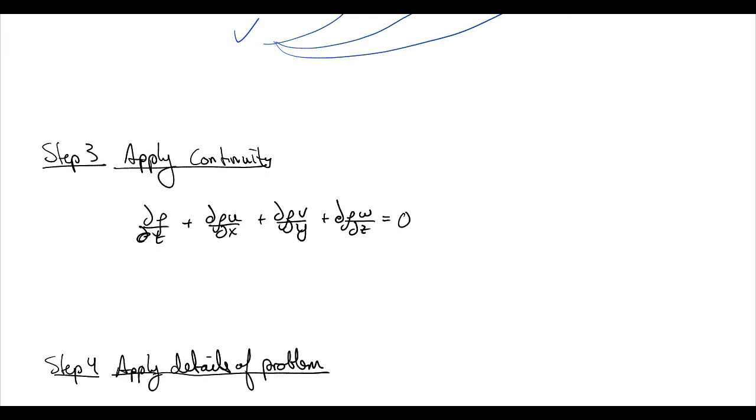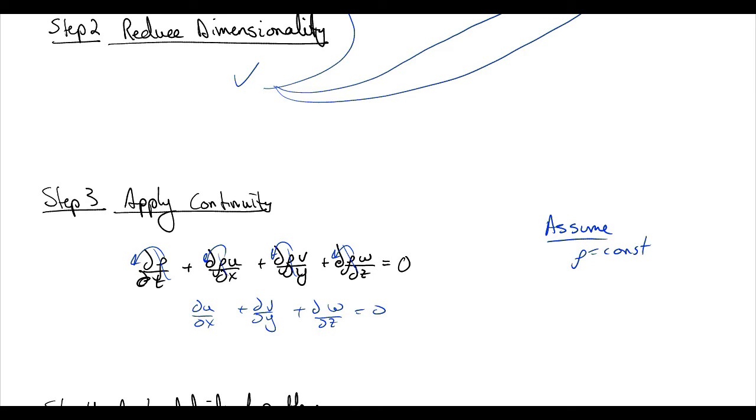So one of the things we're going to additionally assume is that our density is equal to a constant. And if we do that, the density can come out of all of these differentials, like this, and cancel out because we can just divide by rho. And on the right hand side is zero, so zero divided by rho is still zero. And what we get is du/dx plus dv/dy plus dw/dz is equal to zero. But we know already from reducing our dimensionality that dw/dz is zero. Again, nothing's going to change in the z direction if it's infinite and homogeneous in that direction. Same with x.